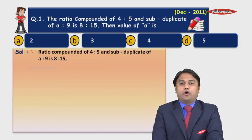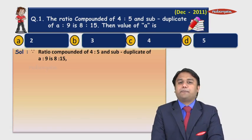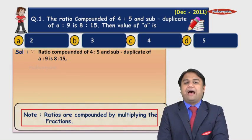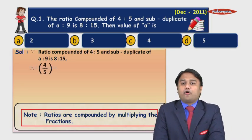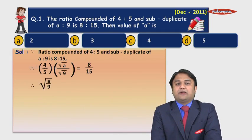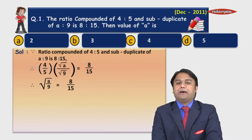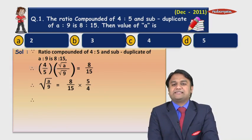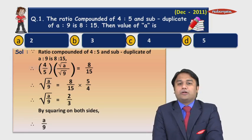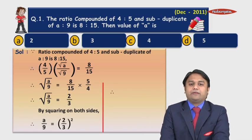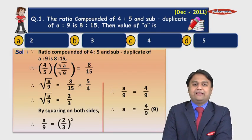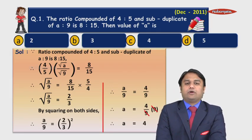Since the ratio compounded of 4 is to 5 and subduplicate of a is to 9 is 8 is to 15, and ratios are compounded by multiplying the fractions, we get 4/5 × (√a / √9) = 8/15. This gives √a / 9 = (8/15) × (5/4). Simplifying, √(a/9) = 2/3. Squaring both sides, a/9 = 4/9, therefore a = 4. Option C is the correct answer.